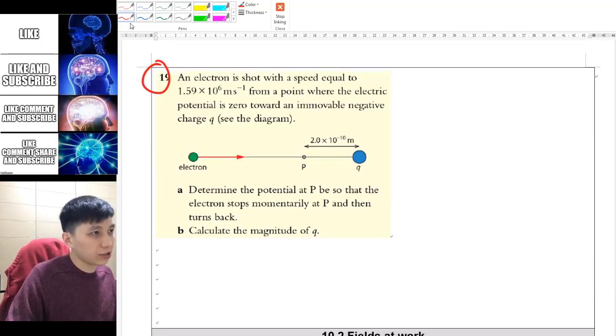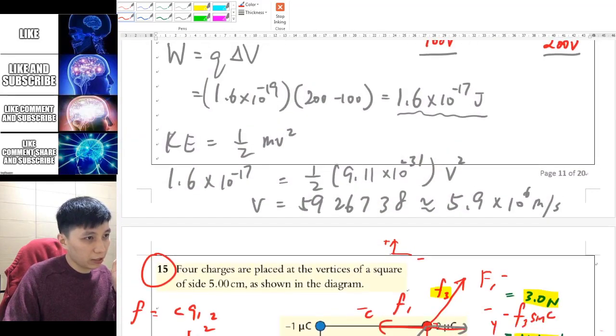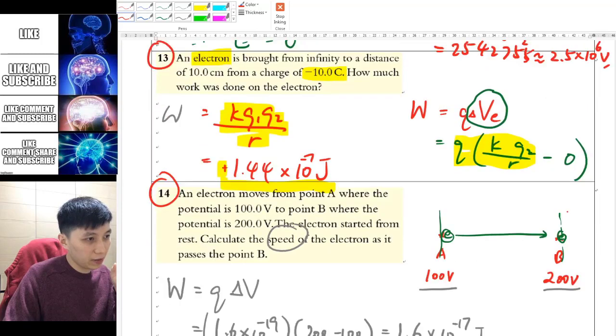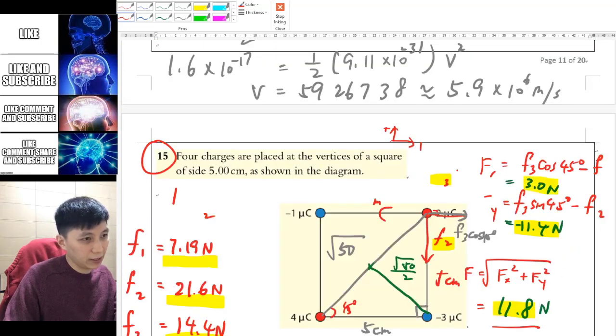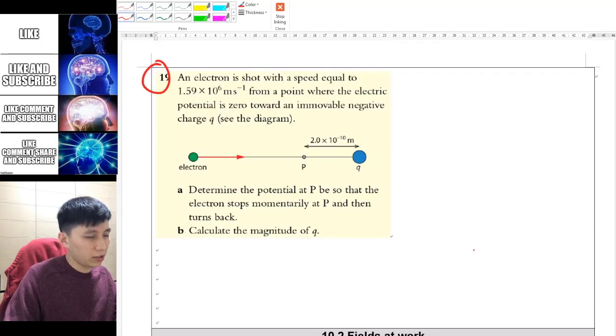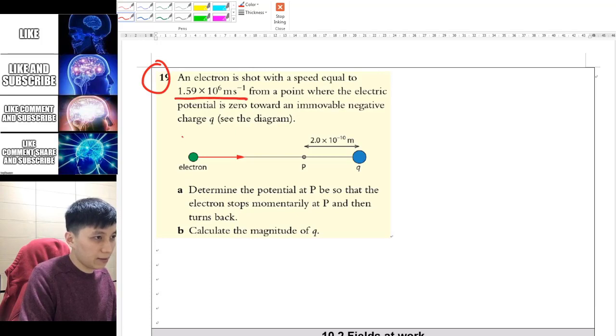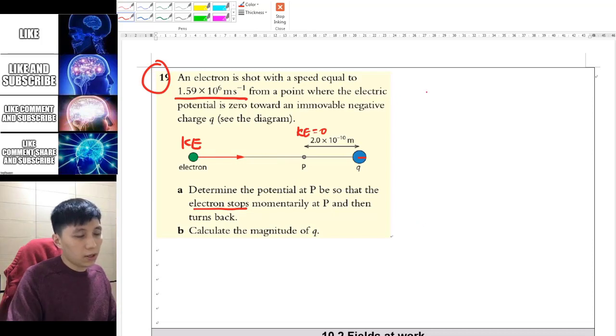Question 19 is similar to 14, calculating how electrical potential affects kinetic energy. It has certain kinetic energy, and the electron will be repelled until it stops—where velocity is literally zero because all kinetic energy got turned into potential energy and it turns back. You can construct an equation: KE equals electrical potential energy.